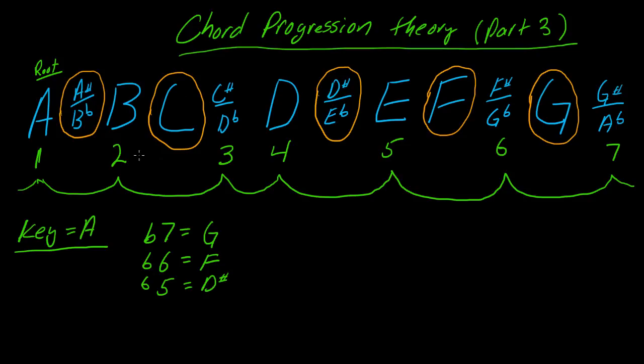C is between 2 and 3; we would call that flat 3, because it's one step lower than 3. There's one more—between 1 and 2.